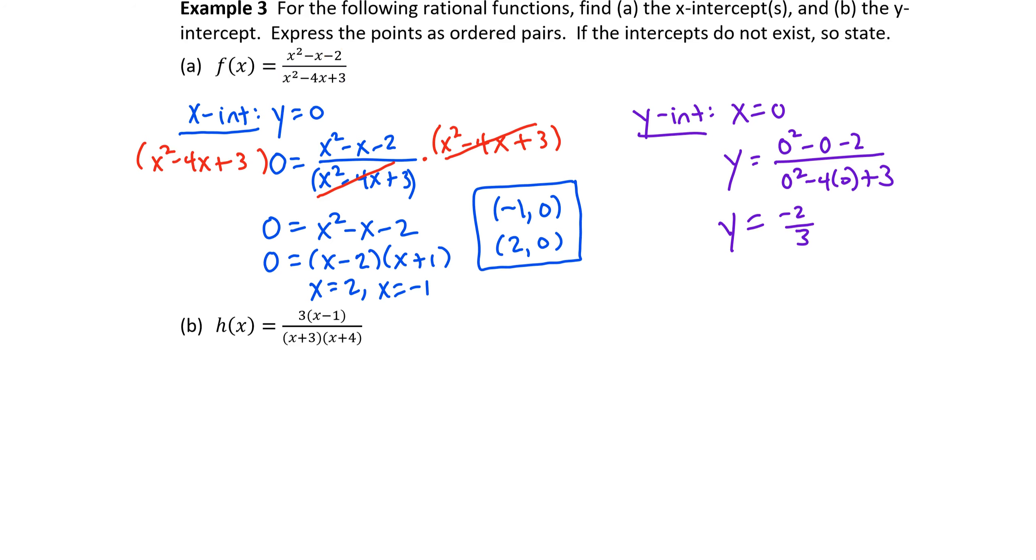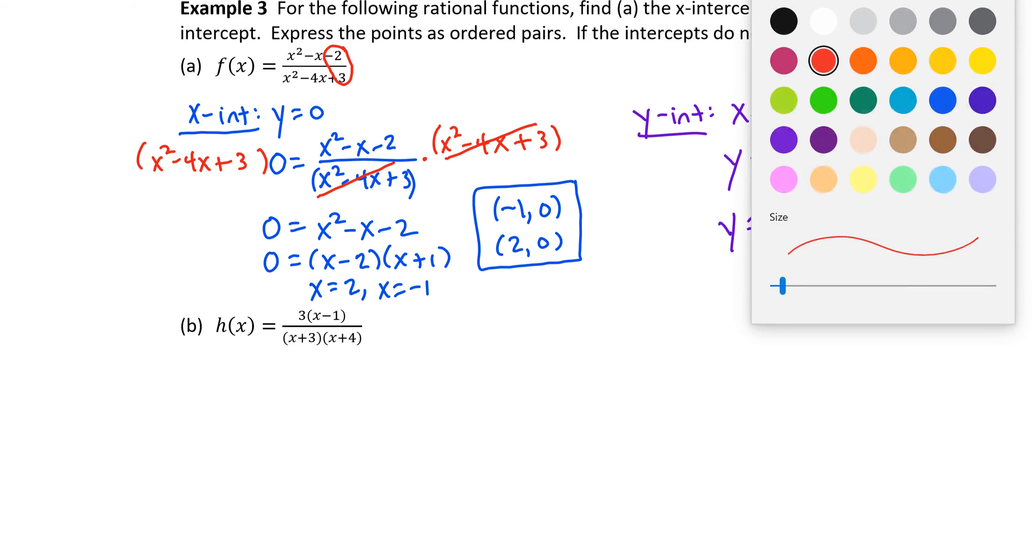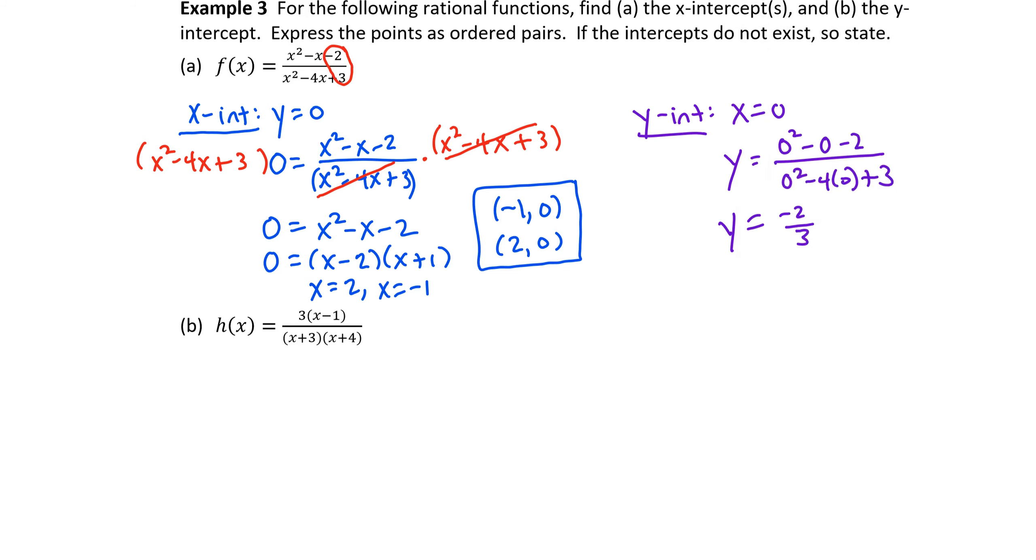We're applying that principle to both the top and the bottom. When I set all the x's equal to 0, the only thing that's going to be left there are the constants in both the numerator and the denominator. So I can quickly glance at the constants in the top and the bottom and recognize that as part of the y intercept. So officially, our y intercept would be the ordered pair 0, negative 2 thirds.